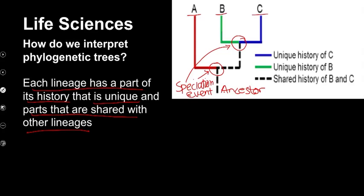If we have a look at the red line here, that is unique history to A. The dotted line would be shared history of B and C — they have a shared history. What is unique to B is shown in green, and what is unique to C is shown in blue. So as we said, some lineages have unique history, and some have shared history.